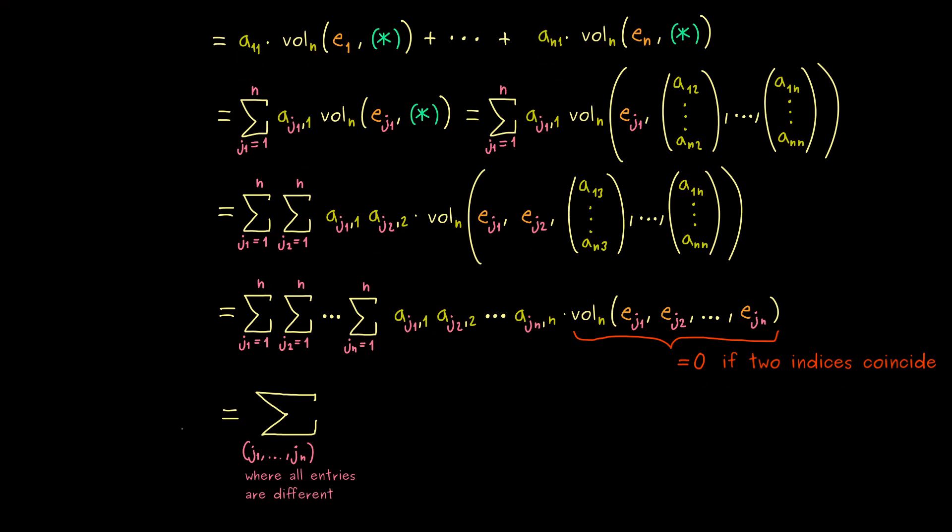Indeed, this is a very common mathematical concept. It's called a permutation. More precisely, it's a permutation of the set with n elements. So you could say it's a reordering of the numbers 1 to n.